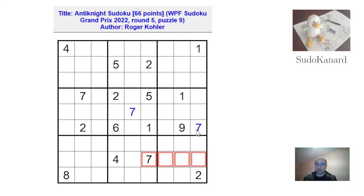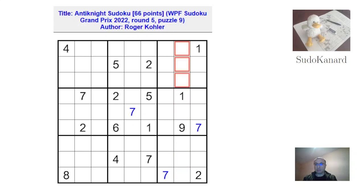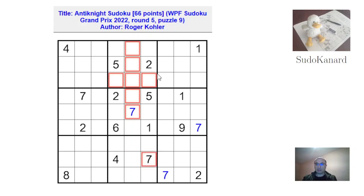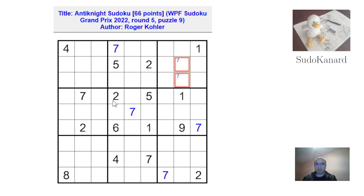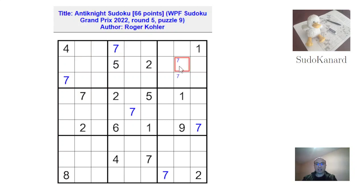This seven forbids all of those cells, this seven here forbids those cells, so there's a seven here and there. That must be a seven somewhere, but first this seven removes all those positions and this seven removes this one, so there's a seven here. Seven must be somewhere in one of those two cells. This seven removes all those positions, this seven removes those two positions — so there's a seven here, a seven there, and the last seven in the grid is here. That's a nice start.